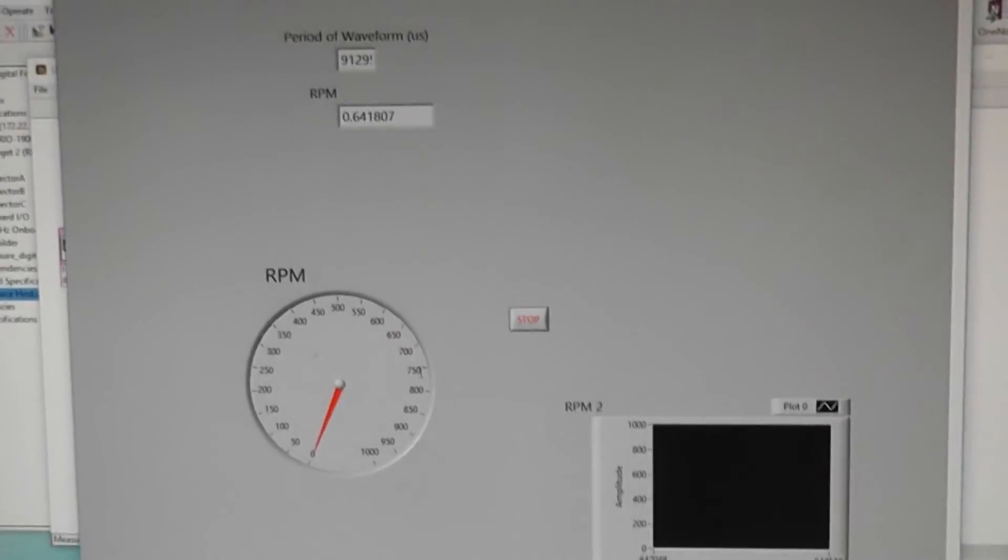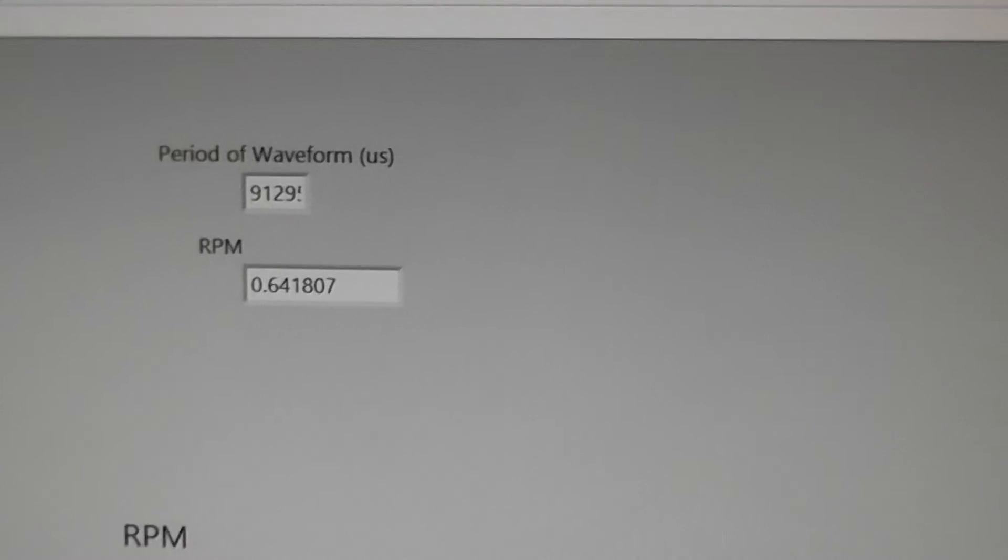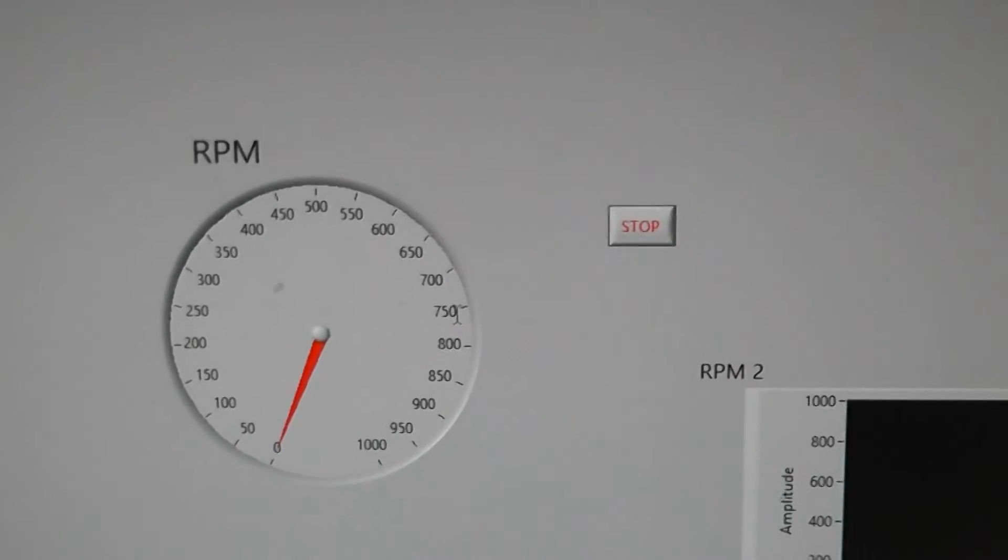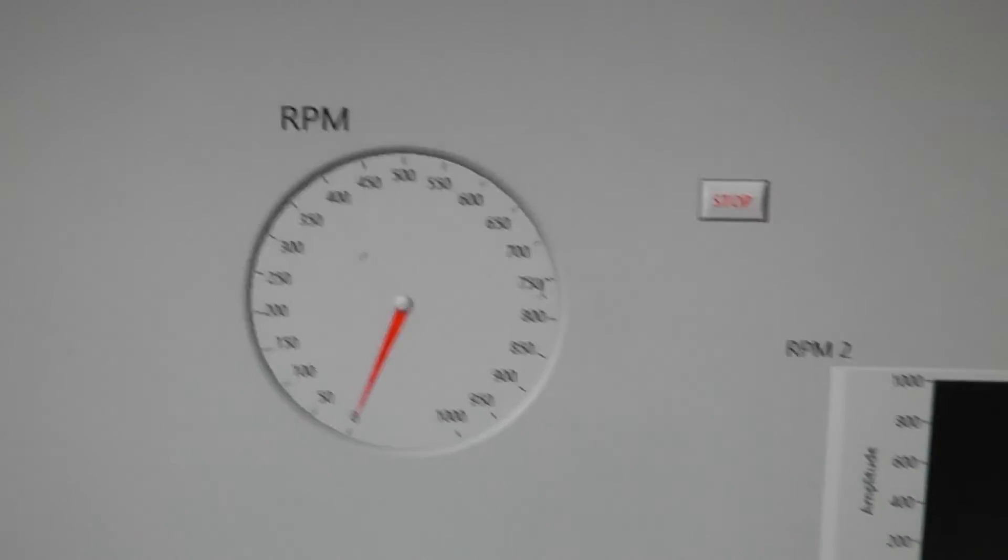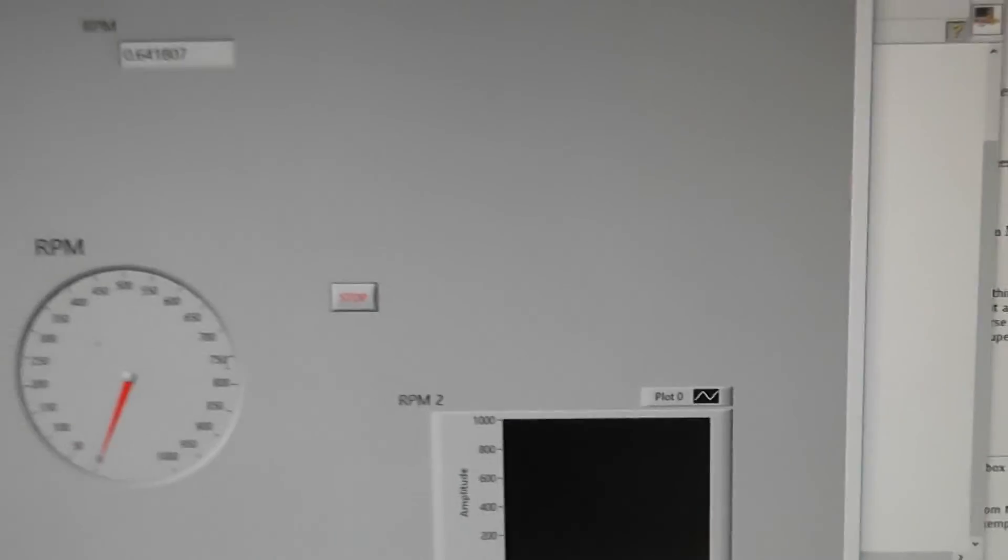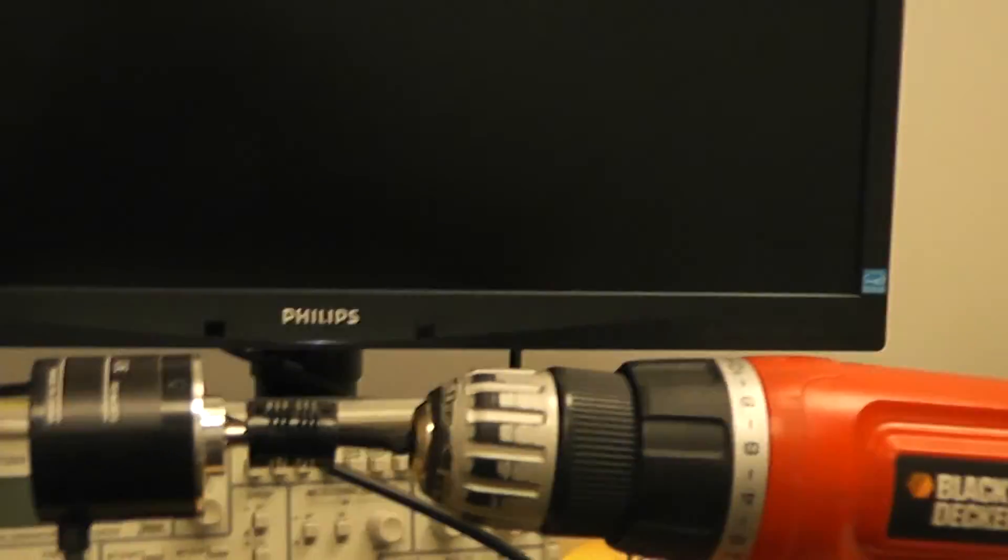And then on the front display, if I zoom out, I've got a number of displays. I've got RPM meter here, like a tacho in a car and a graph. Now, if I take you over here, I'll show you the actual example.